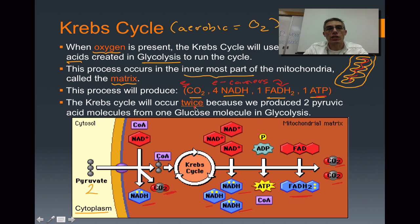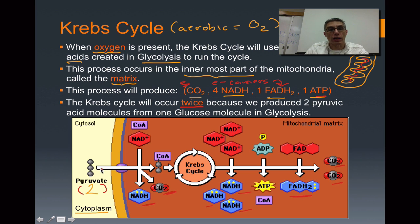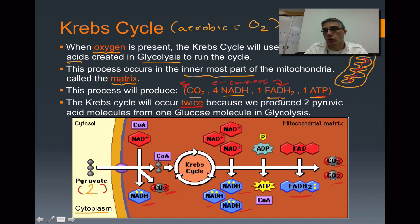The Krebs cycle is going to occur twice, because we had produced two pyruvic acids in glycolysis. It goes through the entire cycle once, then uses the second pyruvate for a second pass. So instead of three CO2s we get six, instead of four NADHs we get eight, instead of one FADH2 we get two, and we end up with two ATPs total from Krebs. That's why Krebs produces two ATPs — because the cycle runs twice.